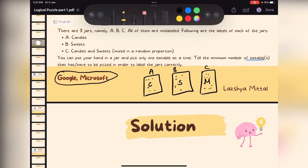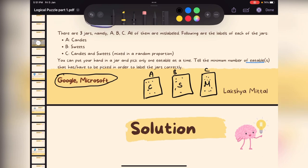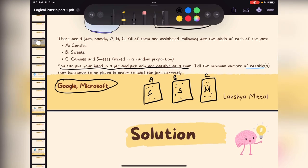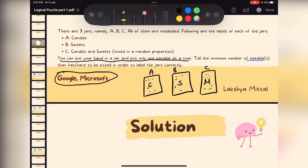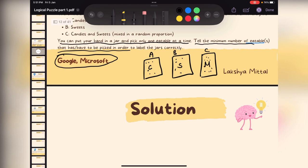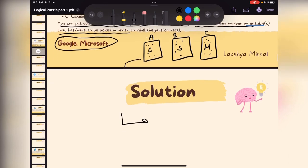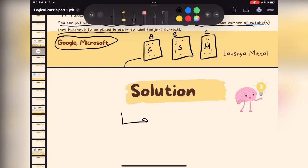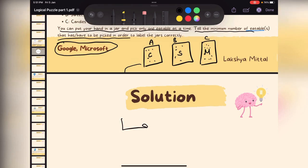So what we have to do? You can put your hand in a jar and pick only one eatable at a time. And we have to determine the minimum number of eatables that have to be picked in order to label the jars correctly.